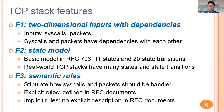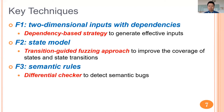However, some semantic rules are not explicitly described in RFC documents. To address these TCP features, we propose three key techniques: a dependency-based strategy to generate effective test cases, a transition-guided phasing approach to improve the coverage of states and state transitions, and a differential checker to detect semantic bugs.